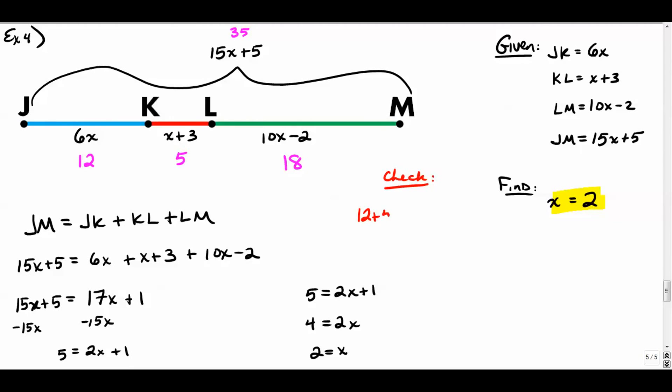So a really good way to check is to make sure once we have our concrete numbers, 12 plus 5 plus 18, does that equal 35? So 12 plus 5 is 17 plus 18 is 35. So yes, that makes sense. That works out for us. That means that our answer of x equals 2 is good to go.